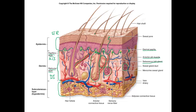To recap: we went over the epidermis and the keratinized stratified squamous epithelium, the epidermal ridges, and the sweat pores. We went over the papillary layer of the dermis with the dermal papillae. We went over the reticular layer of the dermis with the sweat glands, the oil glands, blood vessels, nerve endings, and hair follicles. And we went over the subcutaneous layer of the skin as well.